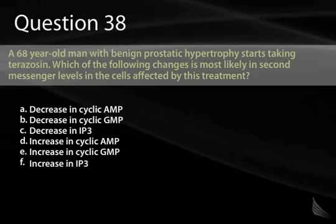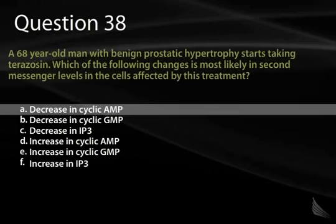Question 38. A 68-year-old man with benign prostatic hypertrophy starts taking terazosin. Which of the following changes is most likely in second messenger levels in the cells affected by this treatment?